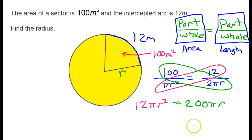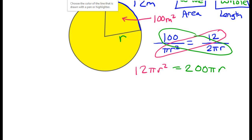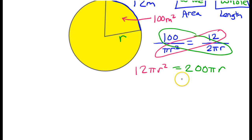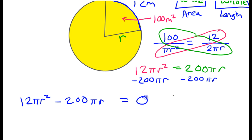We need to solve this equation for r. I'm noticing I've got r² and r, so I can't just get r by itself directly. What I'll do is get 0 on one side. If I subtract 200πr from both sides, on the left-hand side these aren't like terms, so I write them next to each other: 12πr² minus 200πr equals 0.